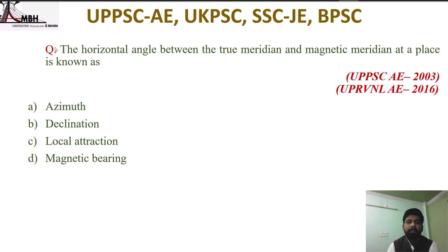The next question: the horizontal angle between the true meridian and magnetic meridian at a place is known as what?